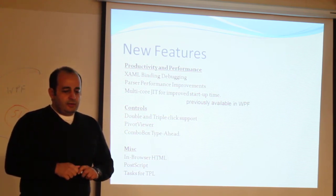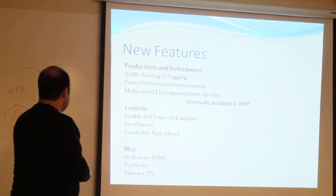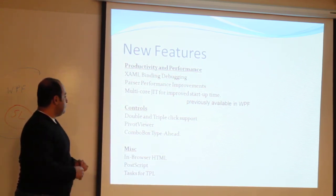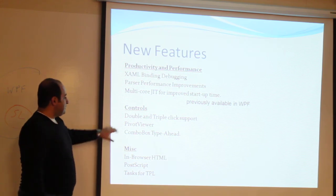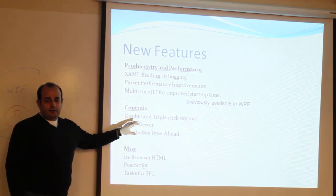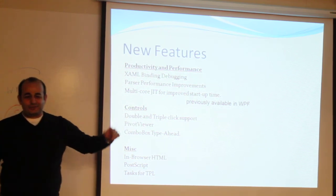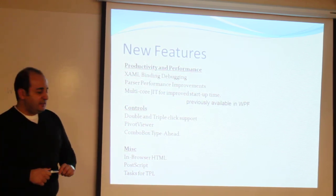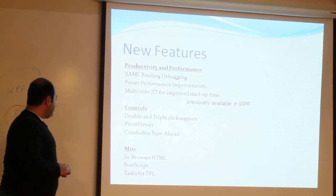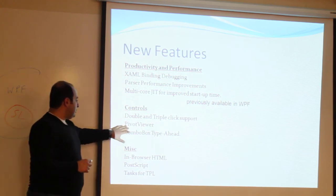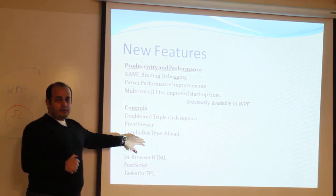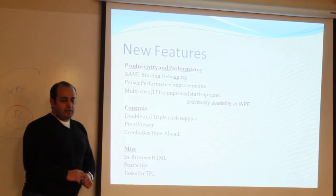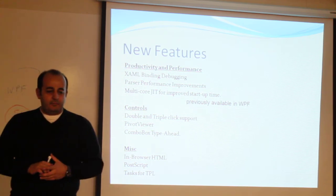Some other features include multi-core JIT for improved startup time and parser performance improvements. For controls, there's double and triple-click support — it sounds a little odd, but those do have their place when coding an application. Also listed are Pivot Viewer and ComboBox Type Ahead included within the toolset, along with miscellaneous changes including in-browser HTML and PostScript.